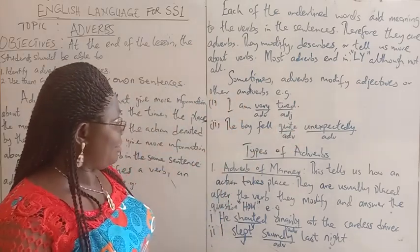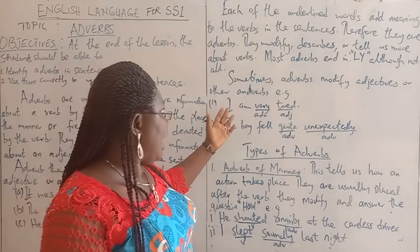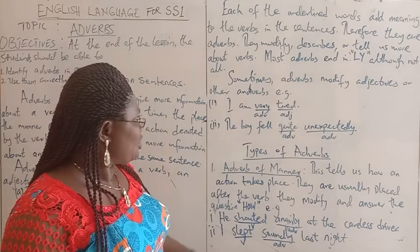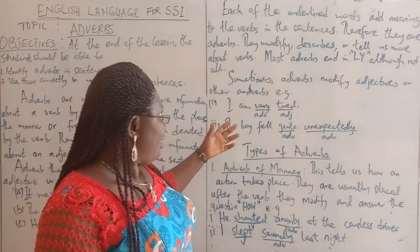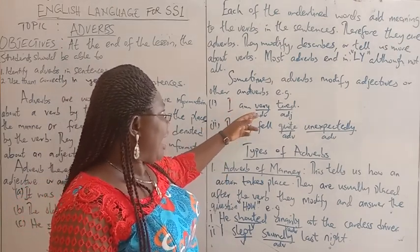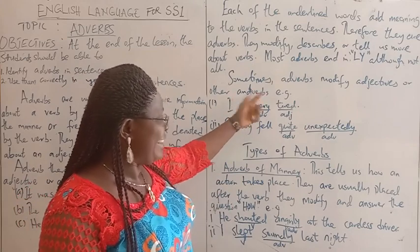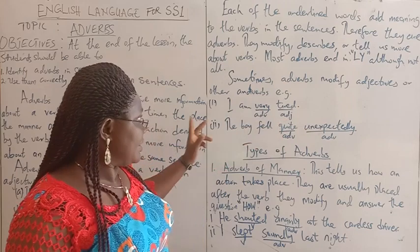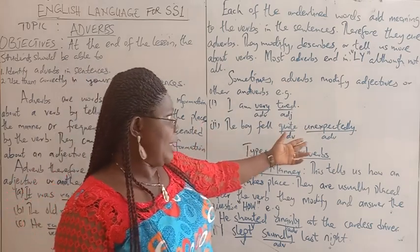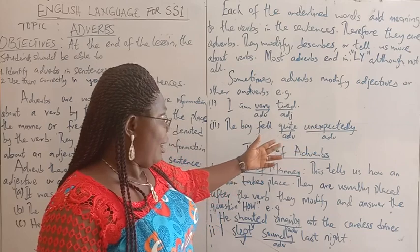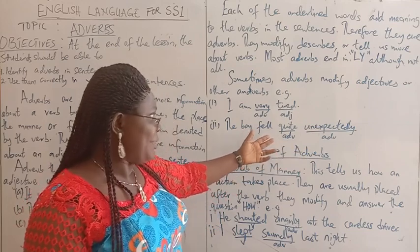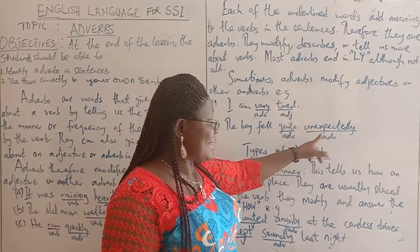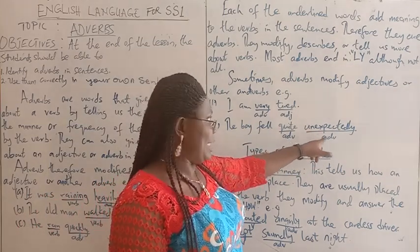For example: 'I am tired' — 'I am very tired'. Here, the adverb 'very' is modifying an adjective. In the second sentence, 'the boy fell quite unexpectedly' — 'quite', as an adverb, is modifying another adverb, 'unexpectedly', in the same sentence.